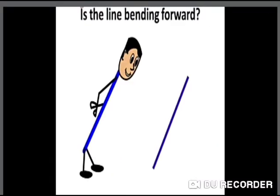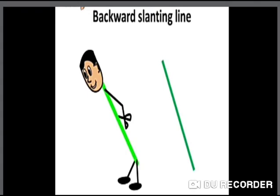If the line is bending forward, it's called a forward slanting line. And if the line is bending backward, we say it's a backward slanting line.